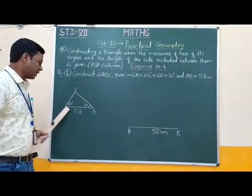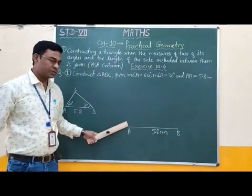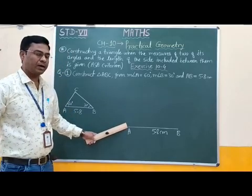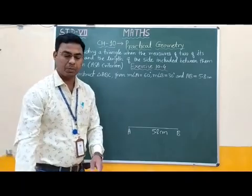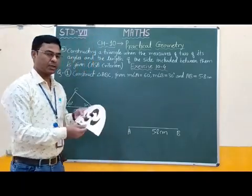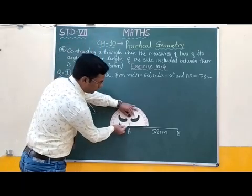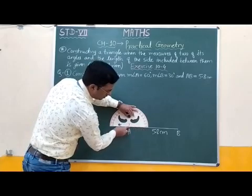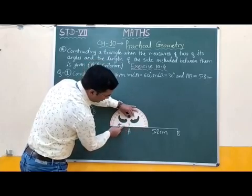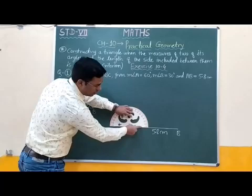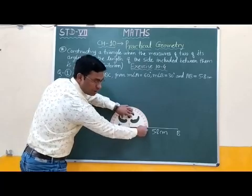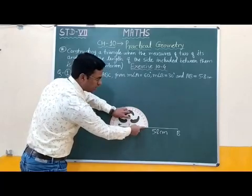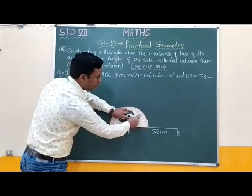Now angle A is 60 degrees. Therefore at this vertex, at this point, we have to draw angle 60 degrees with the help of a protractor. We can put the midpoint of the protractor on vertex A and align this side exactly with side AB. Since the line segment is on the right side of the midpoint, we have to use the inner scale: 10, 20, 30, 40, 50, 60.